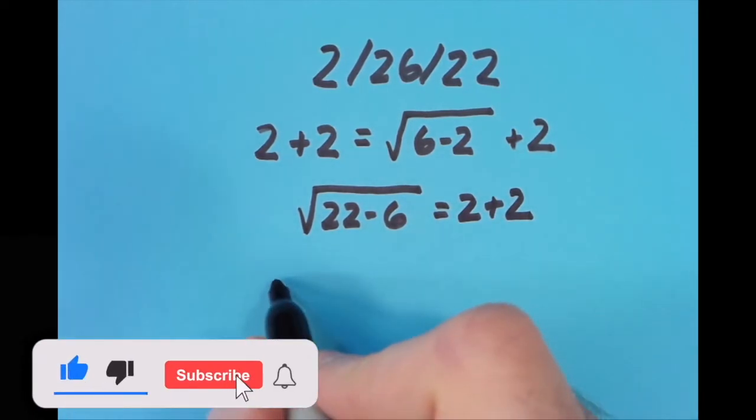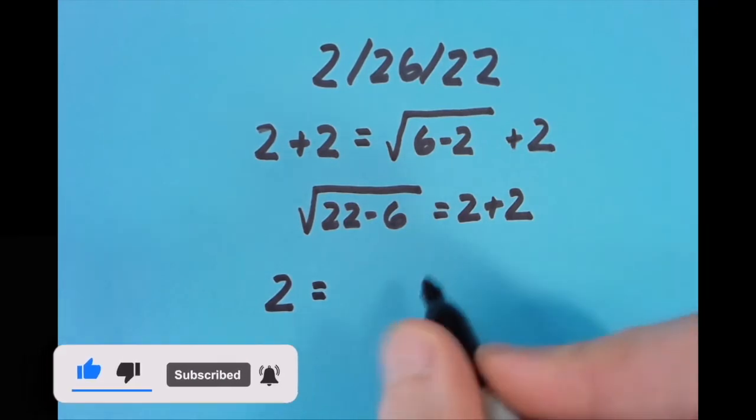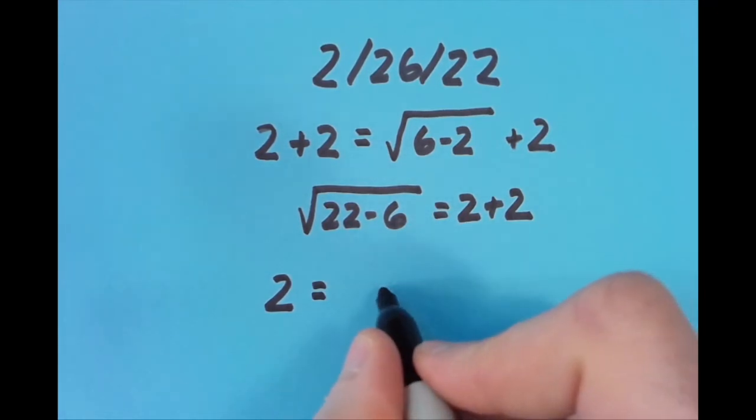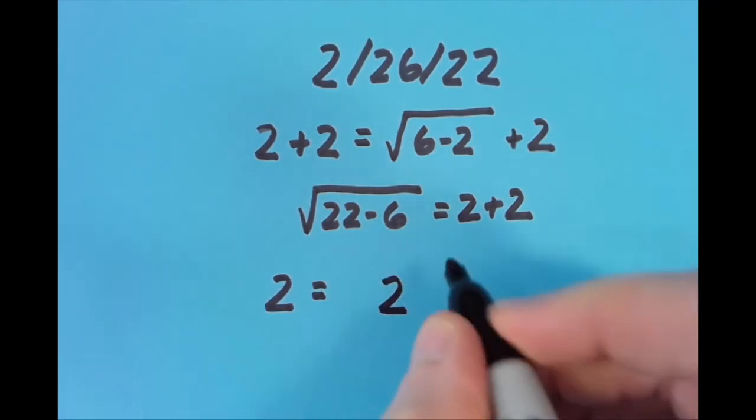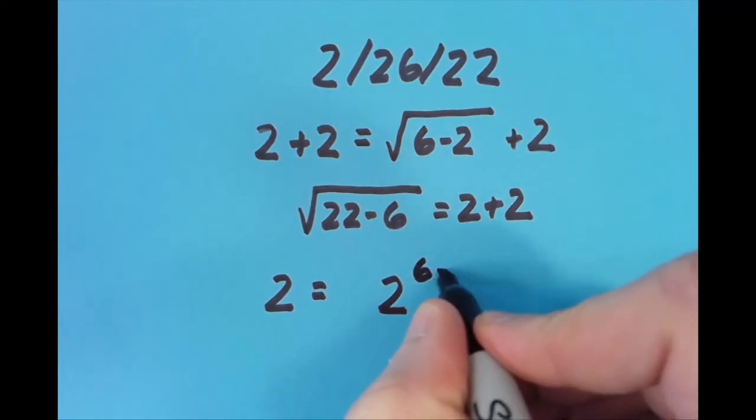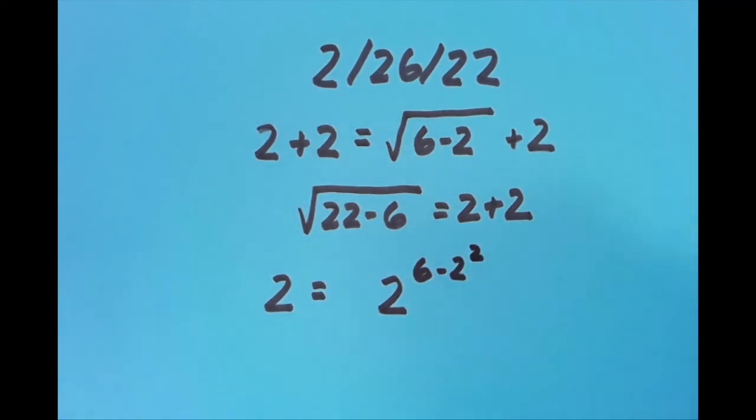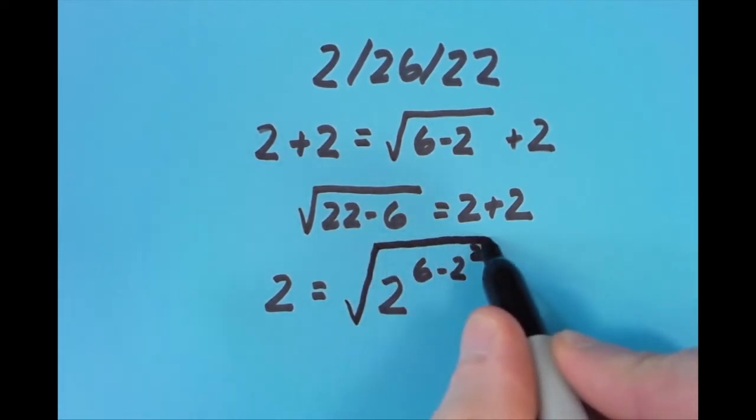Then I said, what if we put the equal sign in the first position? What I said for this one was 2 to the power of 6 minus 2 squared. So the exponent is 6 minus 2 squared—that's 6 minus 4, which is 2. So this is 2 to the second power, which is 4, and the square root of all that gives us 2. I had some exponents, exponents within exponents, and a square root. That was pretty nifty, I thought.